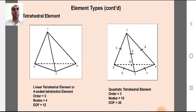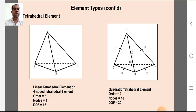The tetrahedral elements include the linear tetrahedral or four-noded tetrahedral element, which is of order three with four nodes, each associated with three degrees of freedom, giving twelve total degrees of freedom. The quadratic tetrahedral element is of order three with ten nodes, each associated with three degrees of freedom, giving thirty total degrees of freedom.